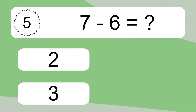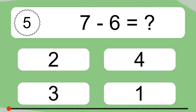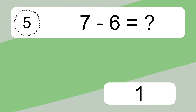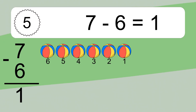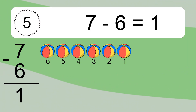7 minus 6 equals what? 7 minus 6 equals 1. Let's count it: 6, 5, 4, 3, 2, 1.